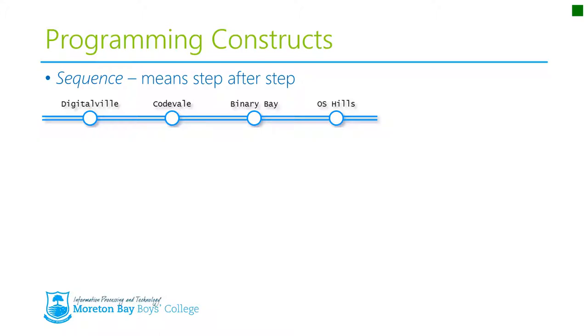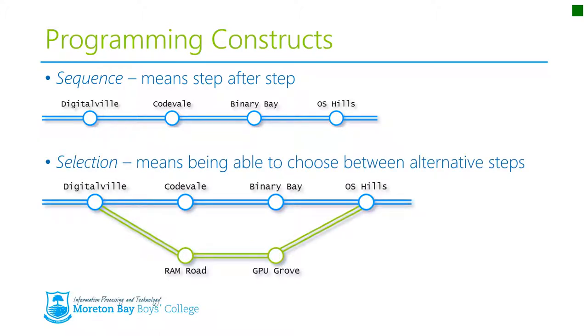We then recently explored the selection construct, which gives the capacity for the program to split down possible paths. In this image here, the program can choose to go from Digitival to either CodeVail or Ram Road. It can't go to both - it goes to one or the other, and they run along their respective tracks or paths until they meet up again at OS Hills. So those are the two constructs we've had.